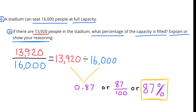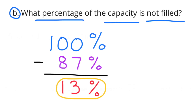Number 6. A stadium can seat 16,000 people at full capacity. A. If there are 13,920 people in the stadium, what percentage of the capacity is filled? 13,920 divided by 16,000 equals 0.87, or 87%. So 87% of the capacity is filled. B. What percentage of the capacity is not filled? 100% minus 87% equals 13%, so 13% of the capacity is not filled.